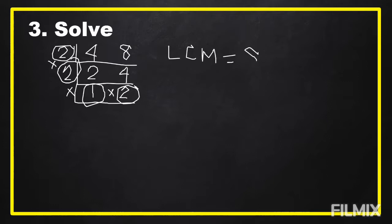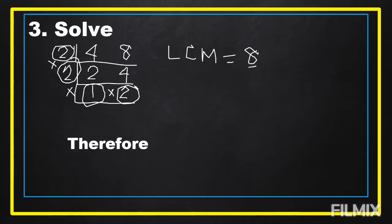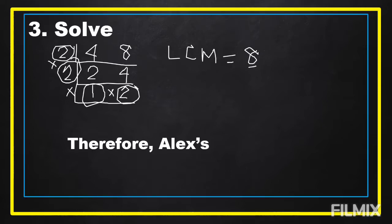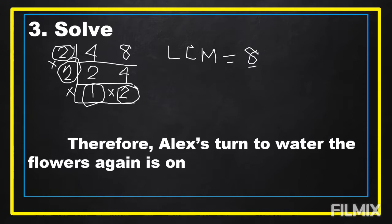In our plan, after we get the LCM, we're going to add 8 to the day of the month she watered the flowers together. Therefore, Alex's turn to water the flowers again is on the 11th day of the month.